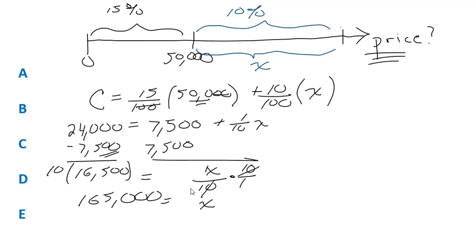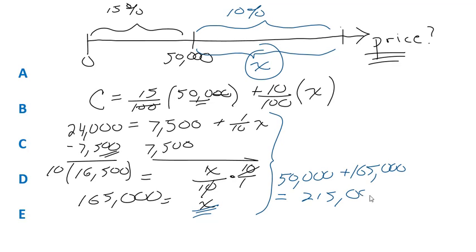Now that is the way that many people would solve this problem, and it's absolutely a good way to solve it, as long as we remember that X represents this amount over and above 50,000. So the total selling price is going to be the first 50,000 plus the additional 165, which is equal to what? $215,000. And that is our answer, answer C.